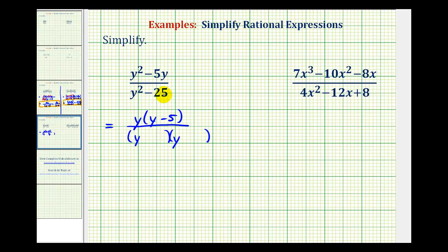The first terms will be y and y, and then for the factors of negative 25, we'll use a positive 5 and a negative 5, so one factor is y plus 5 and one factor is y minus 5. Now that we have this in factored form, we can see the numerator and denominator share a common factor of y minus 5.